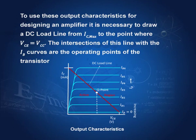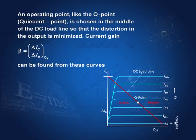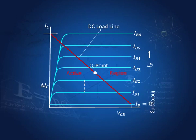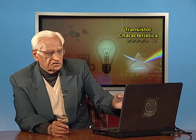So we choose the Q point somewhere in the middle. From the output characteristics, we draw this load line and choose the operating point somewhere in the middle. The change in the collector current to the change in the base current — this ratio is called beta, the current gain. The ratio of how much change in IB produces how much change in IC: the change in IC is much more than the corresponding change in IB, and this ratio is called beta, the current gain of the transistor.